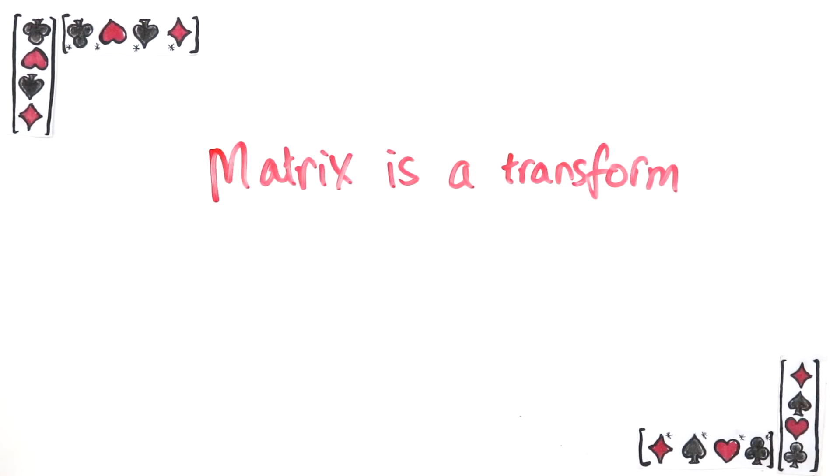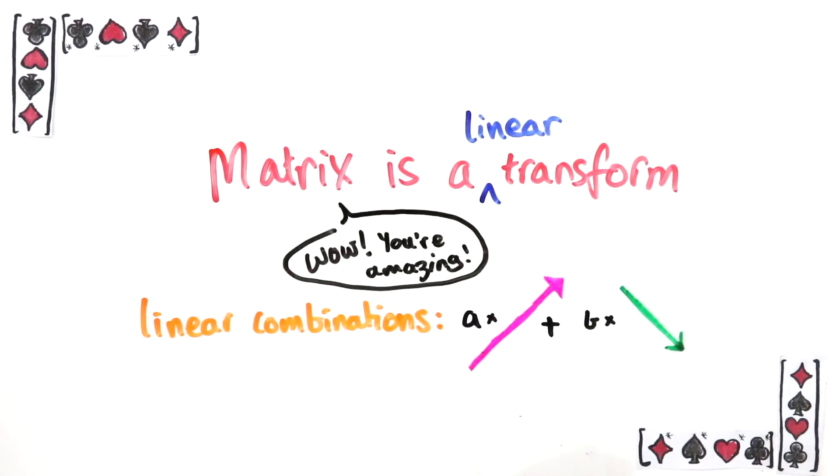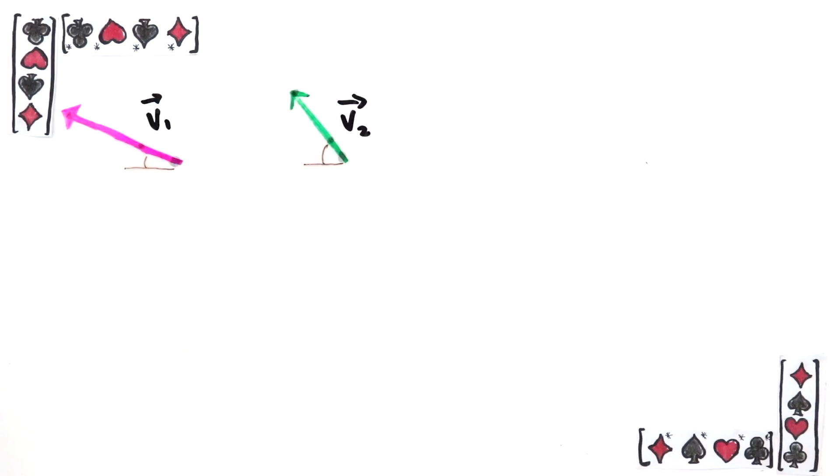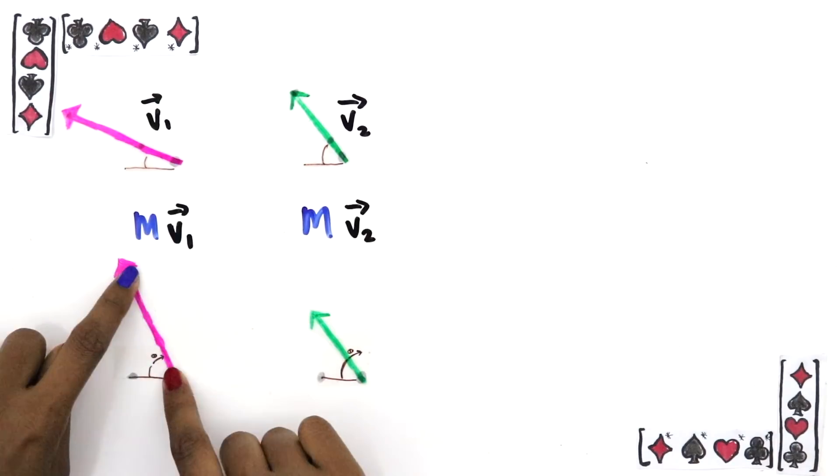A matrix is a transform, but a very specific type called a linear transform, which is something that respects linear combinations. Let's say I have two vectors. I'm going to apply this matrix to each of them, and that will transform them in some way.